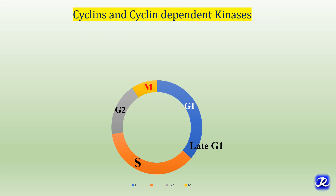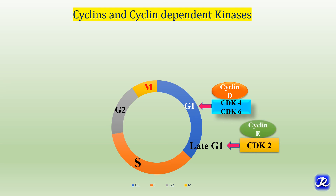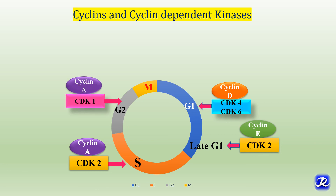A specific cyclin activates a particular CDK, which is a serine and threonine kinase. In G1 phase, the cyclin D–CDK4/6 complex is active. In late G1 phase, the cyclin E–CDK2 complex is important; cyclin E is rapidly degraded and released, so CDK2 then forms a complex with cyclin A. This sequence is necessary for the initiation of DNA synthesis in S phase. In G2 phase, the cyclin A–CDK1 complex is important, and the cyclin B–CDK1 complex is rate-limiting for the G2/M transition.